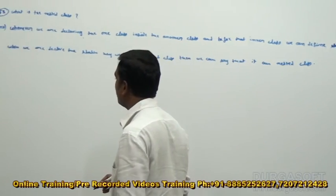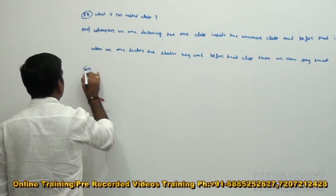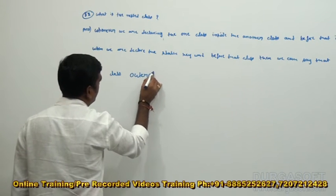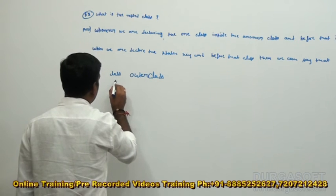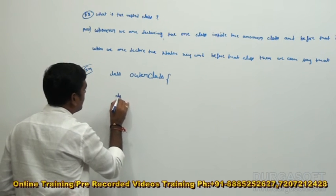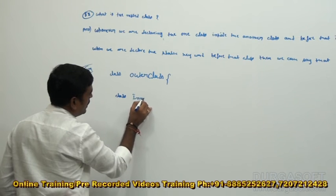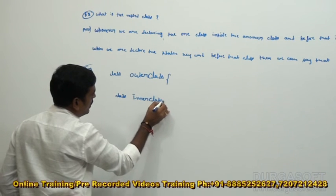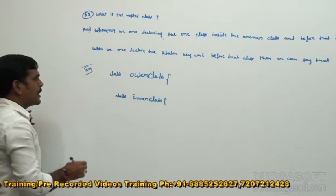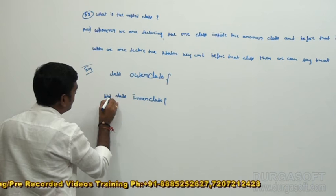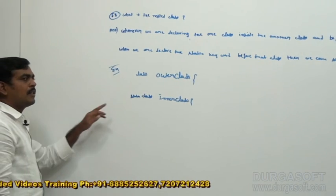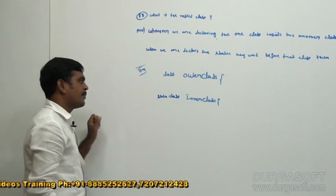For example, class outer class — after that we can define the inner class. Before this inner class, we can put static. Such type of classes we call static classes, or we call them nested classes.